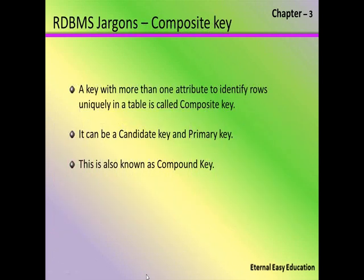A key with more than one attribute to identify rows uniquely in a table is called a composite key. In a table, a record can be uniquely identified by the composite key. A candidate key or primary key can be a composite key.